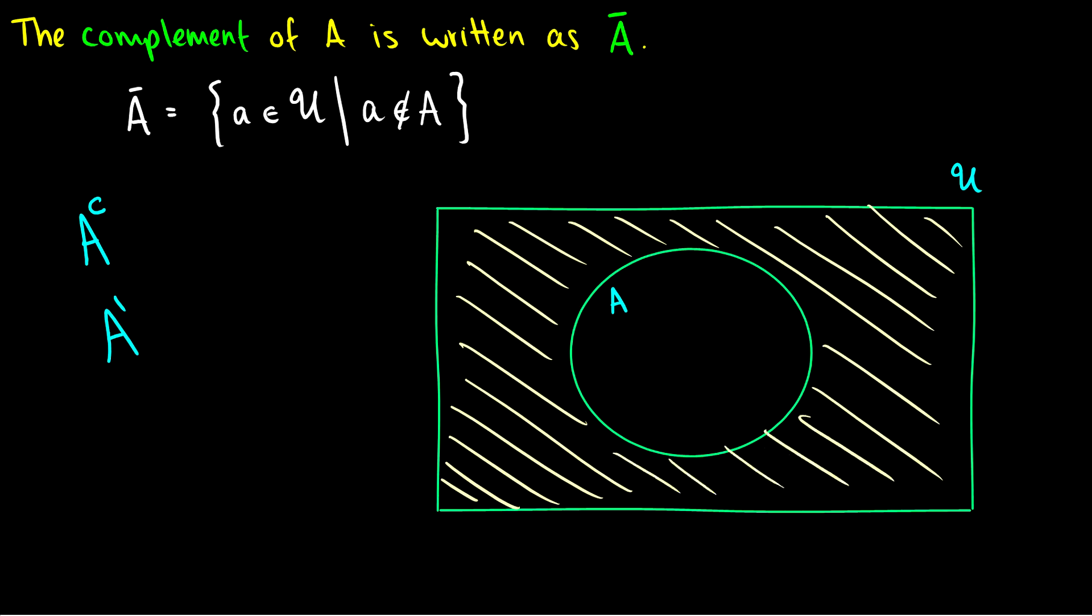So for instance imagine if I had A which is just the set containing 1 and 2 but the universe was all the numbers up to 5. So the universe is set 1, 2, 3, 4, and 5.